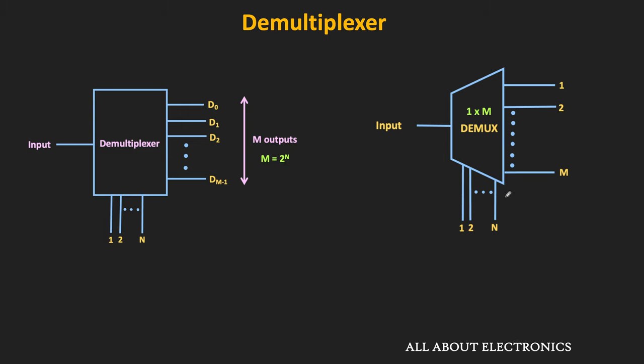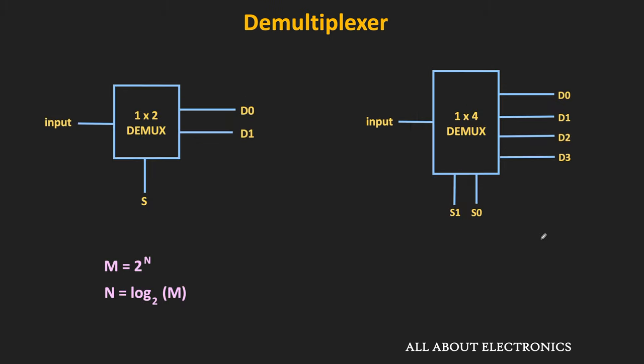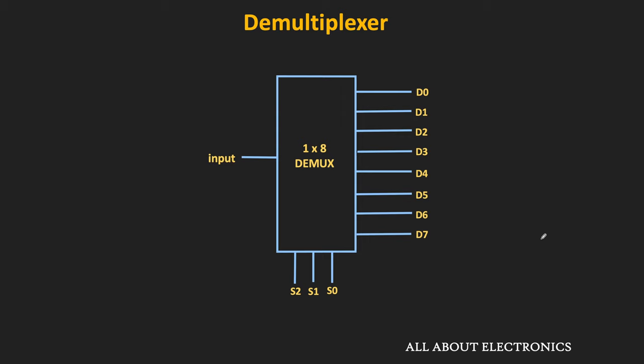Depending on the number of outputs and selection lines, we have different types of demultiplexers — like a 1×2 demux and a 1×4 demux. The 1×2 demux has 1 input, 2 outputs, and 1 selection line. The 1×4 demux has 1 input, 4 outputs, and 2 selection lines. Likewise, the 1×8 demux has 3 selection lines to select any one of the 8 outputs.